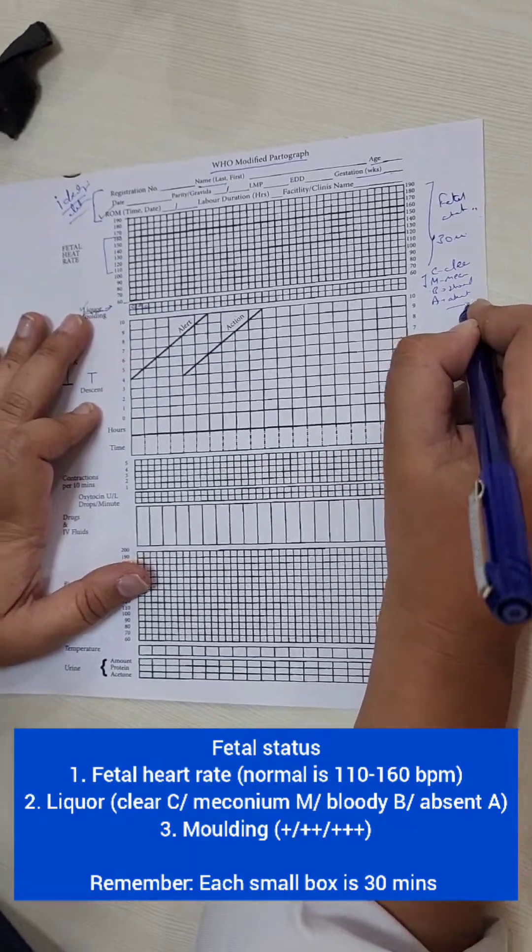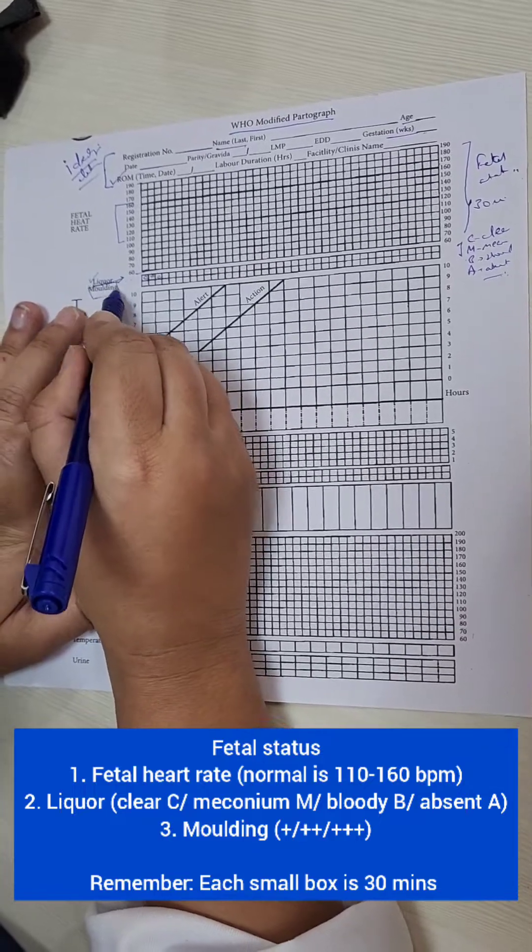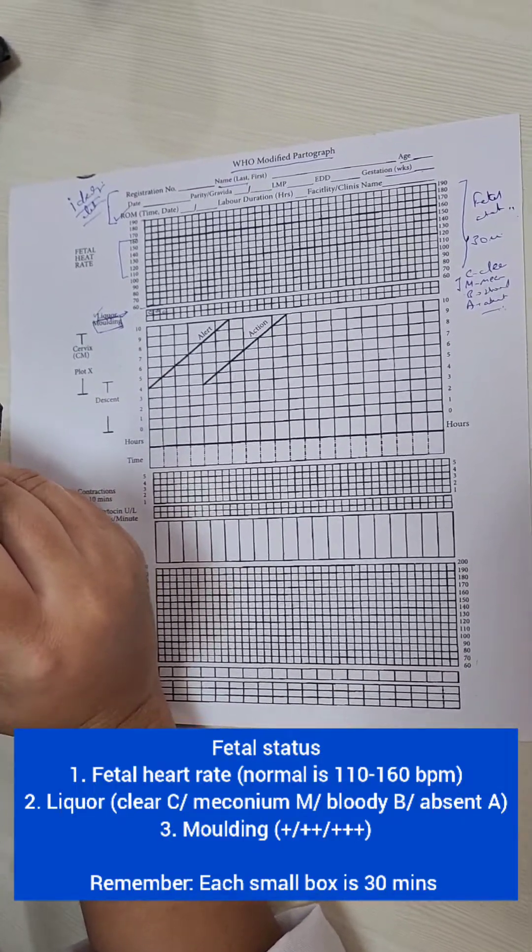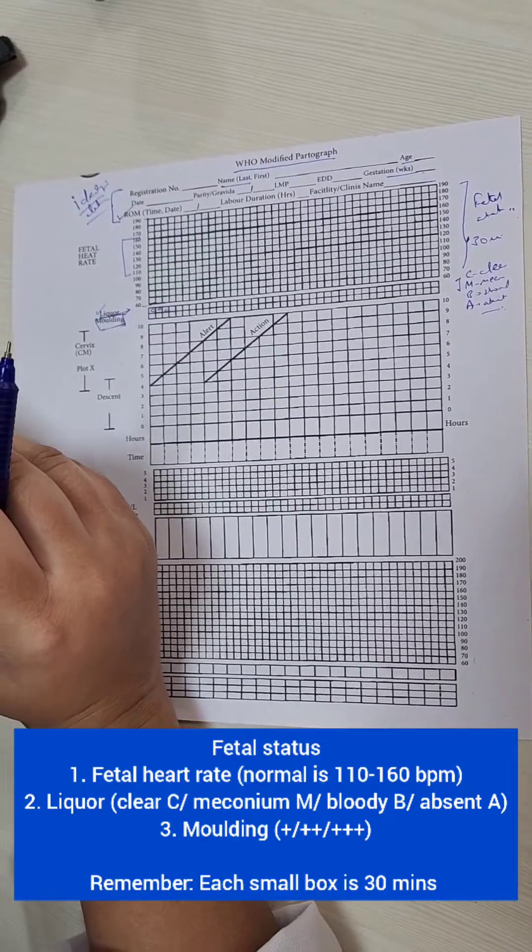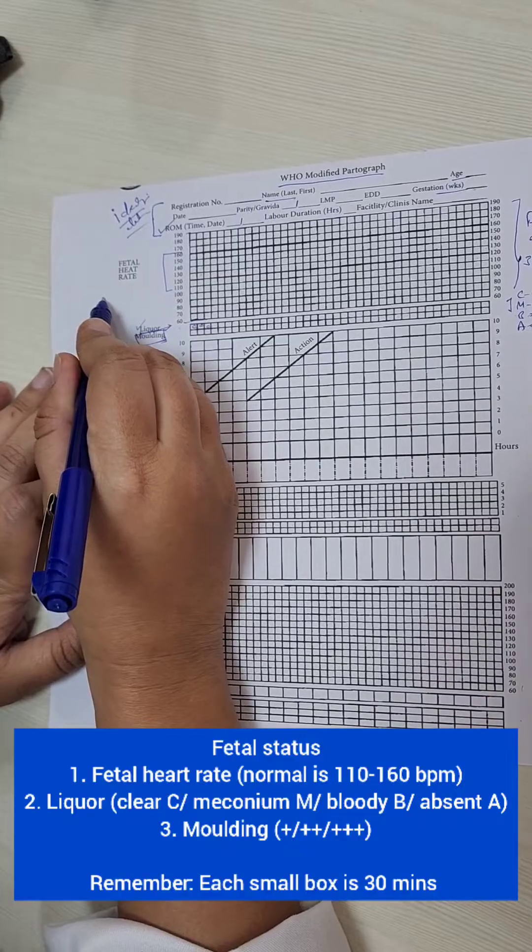The third column for the fetal status is molding. Molding basically means overlapping of the skull bones which happens to some extent during normal labor but excessive molding is bad.